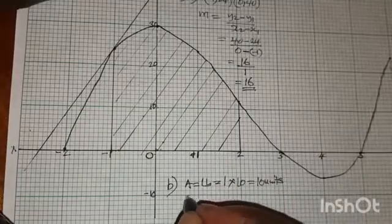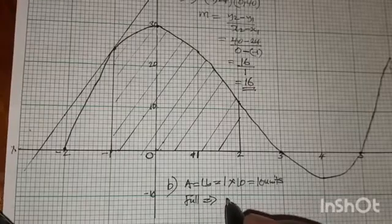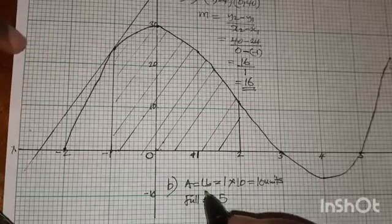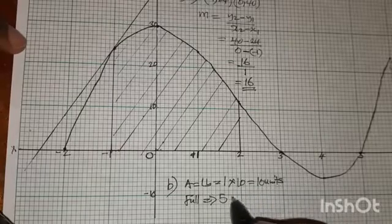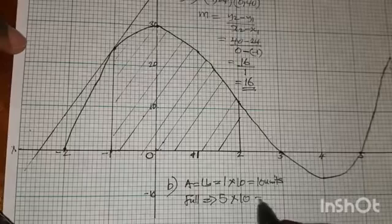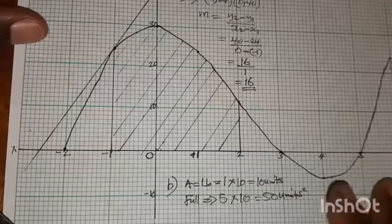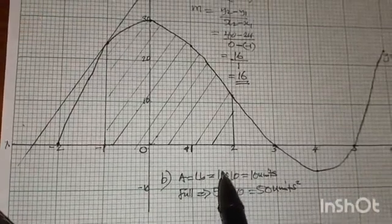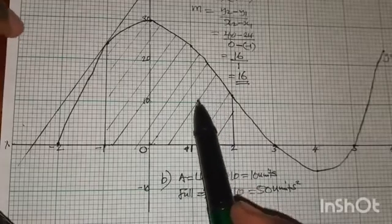For the full squares: 5 × 10 = 50 square units. Then count the half squares. We have 4 half-squares. Each full square has area 10, so 4 × 10 = 40, then divide by 2 because they are halves, giving 20 square units.